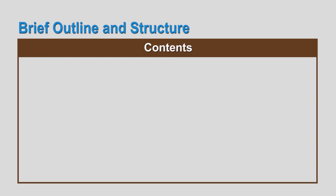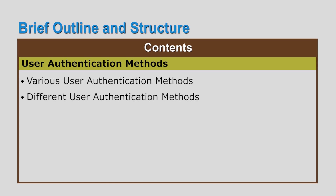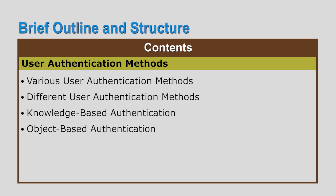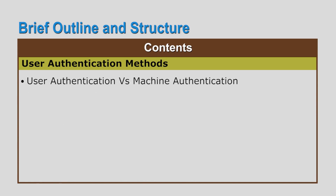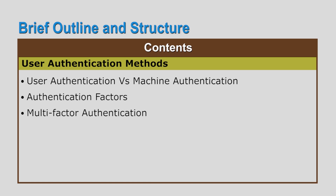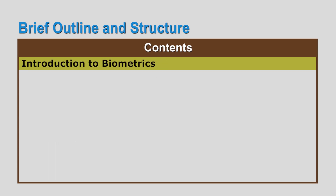Learners will also judge and evaluate different biometrics and suggest suitable ones, and understand the need for multi-modal biometrics. During the first phase we are going to discuss various user authentication methods — different types including knowledge-based authentication, token or object-based authentication, and biometric-based authentication, along with selection and working of authentication methods, user authentication versus machine authentication, various authentication factors, multi-factor authentication, modern authentication methods, and authentication protocols.